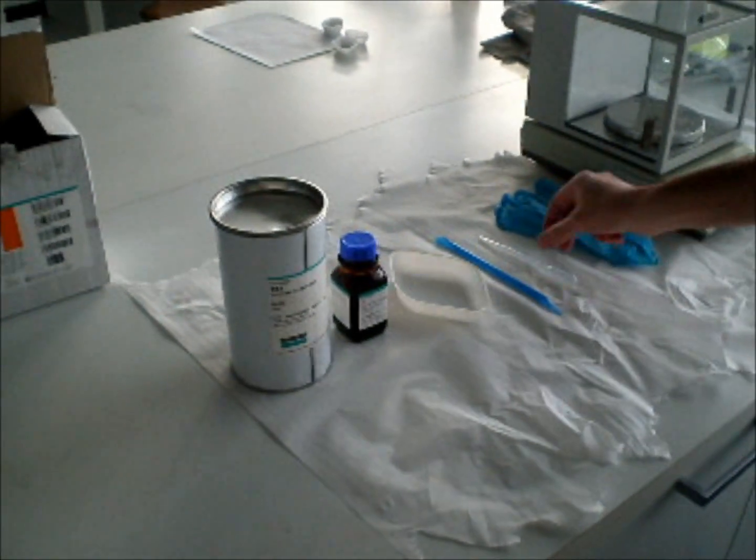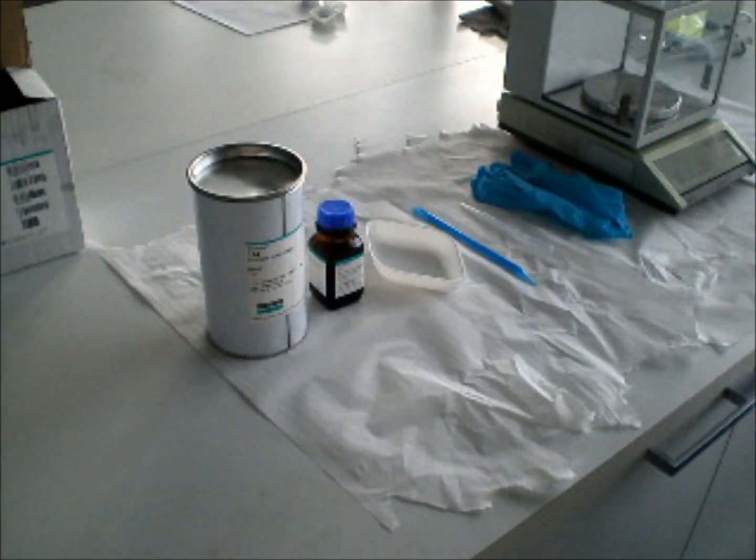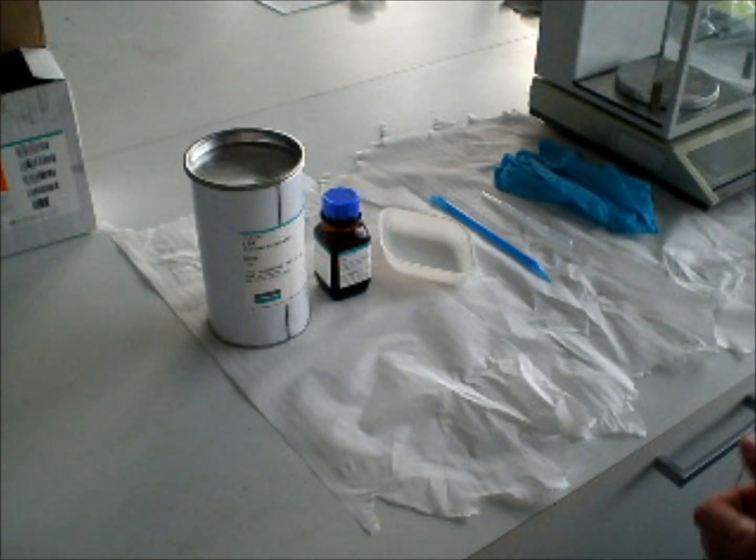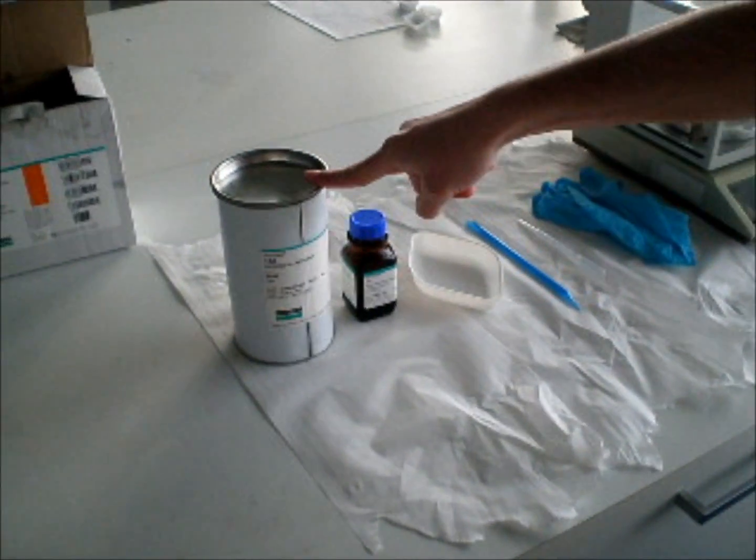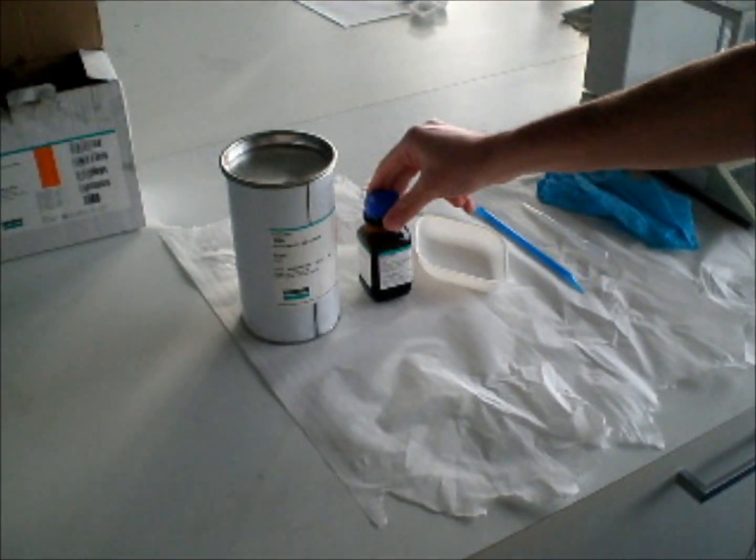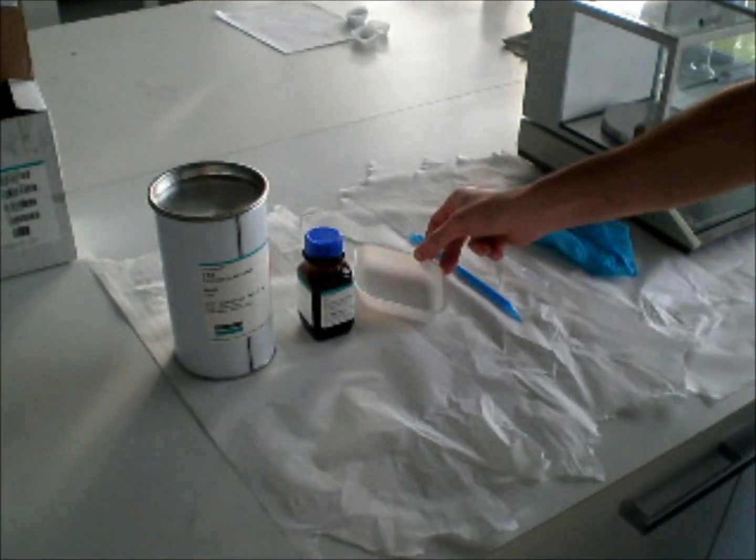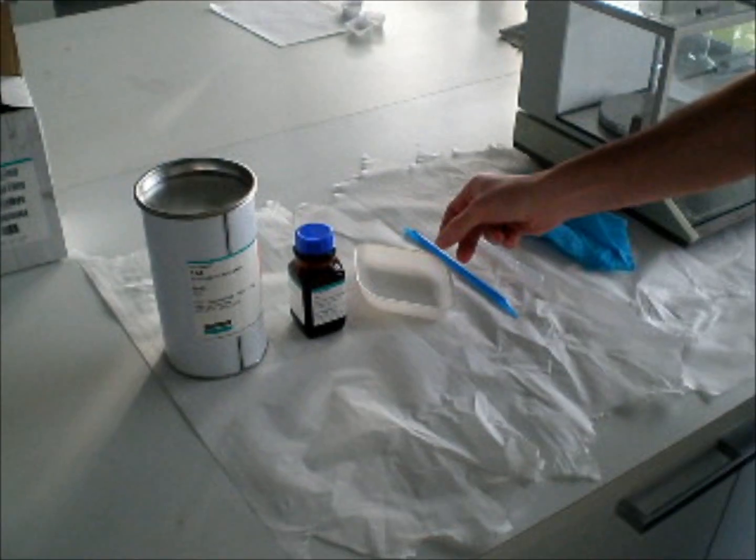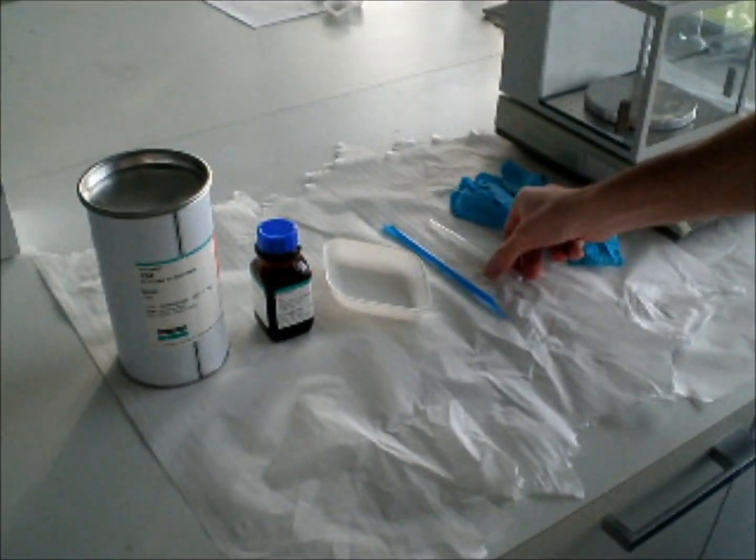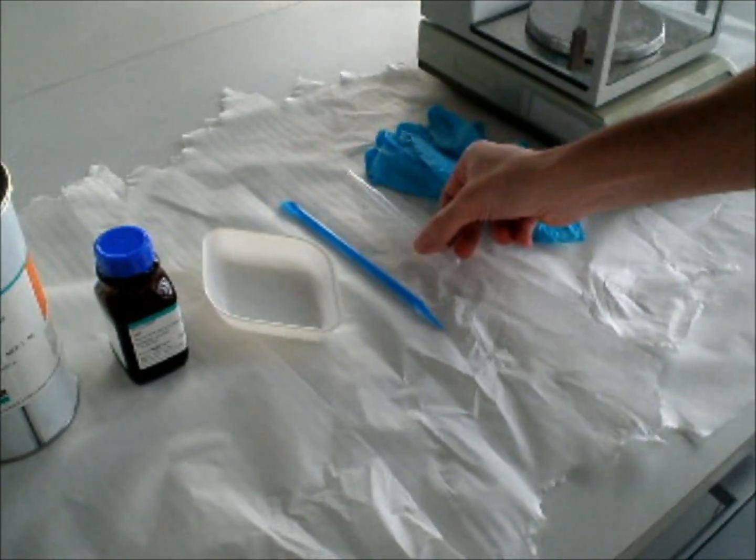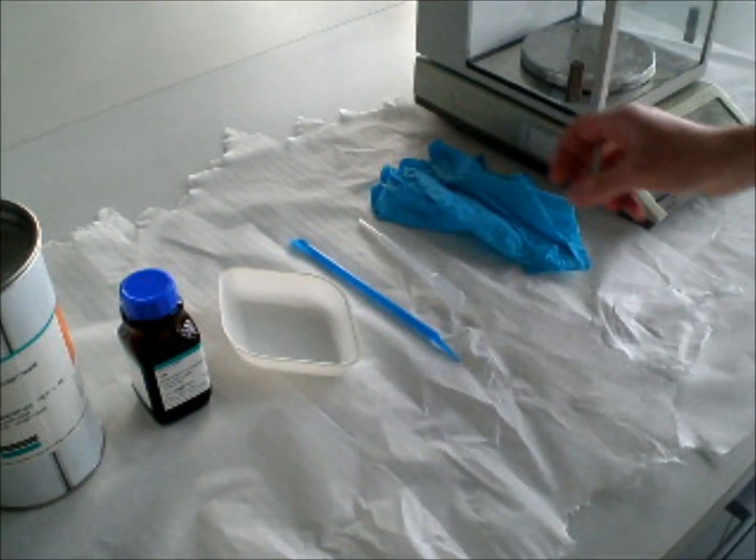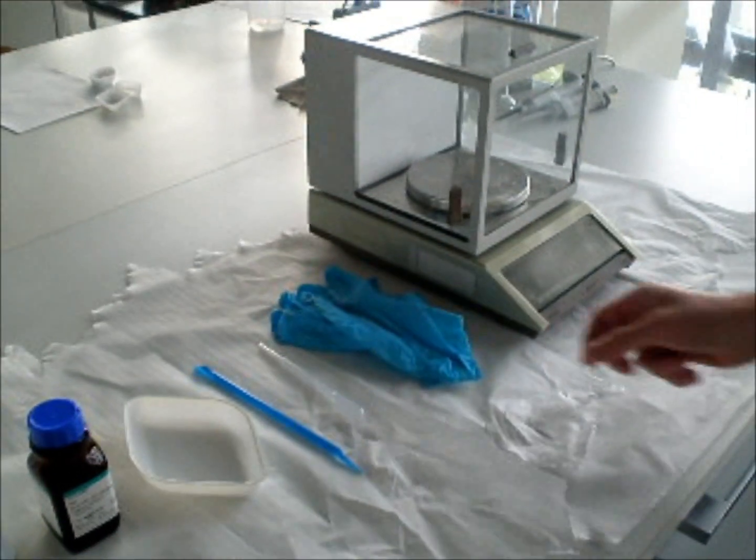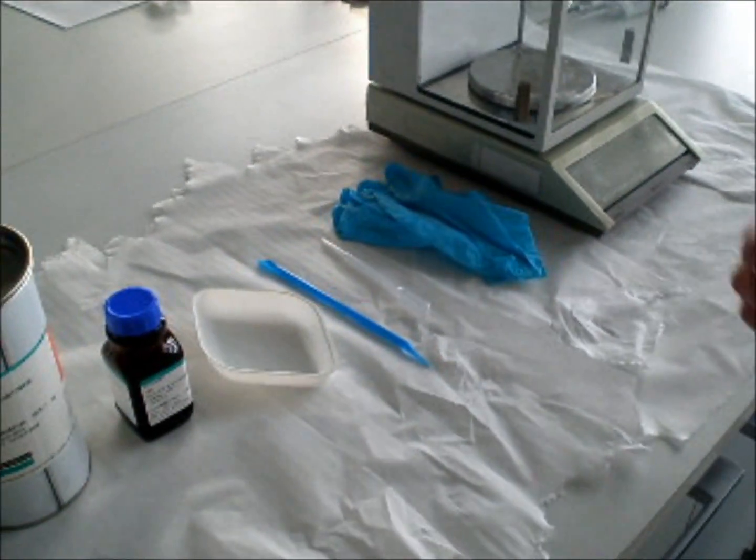Ok guys, today we have made silicone at the University of Southern Denmark in the Nano Lab. What we need for silicone is silicone elastomer, hardener, the plate we will use to mix it, and of course gloves. So let's start.